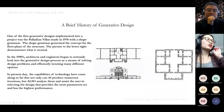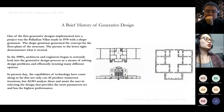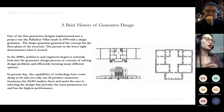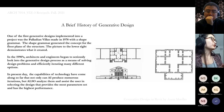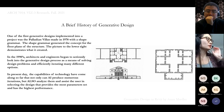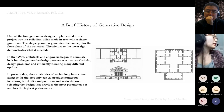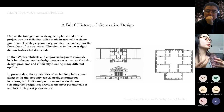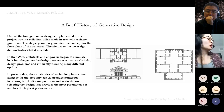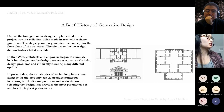A brief history of generative design: there's no set date or person to credit with the invention, but it started around the 1970s — that's when the architecture industry began to really explore it. This floor pattern was actually one of the first generative designs implemented into a project; it is the Palladian Villa made in 1978. In the 1990s, architects and engineers began to look into it more as technology and programming languages became more advanced. Today, AI is really capable of creating numerous iterations and even analyzing them for the user so they can choose the best one.